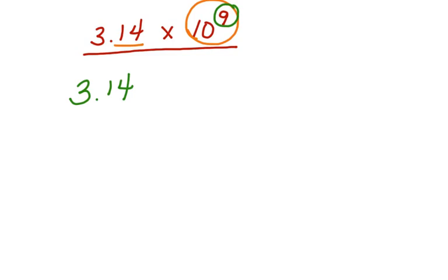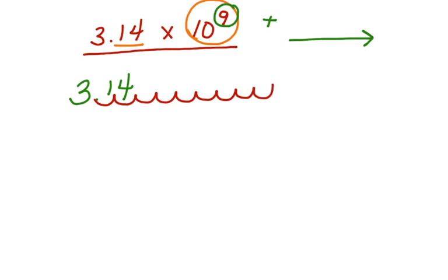Because this exponent is positive, we're going to move the decimal point to the right. Watch — 1, 2, 3, 4, 5, 6, 7, 8, 9 places. We're going to put zeros in the middle: 0, 0, 0, 0, 0, 0, 0, 0, 0. The zeros represent the places that we saw in our exponent.